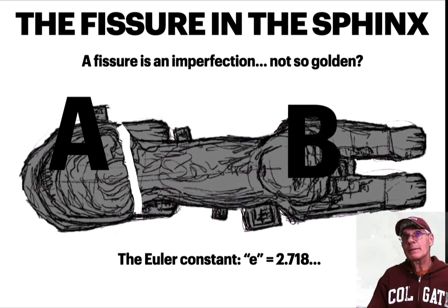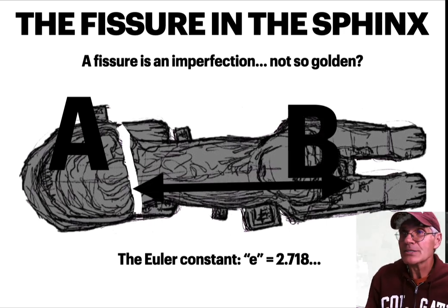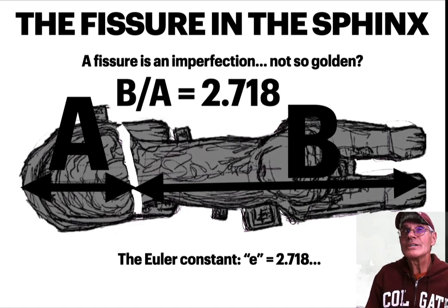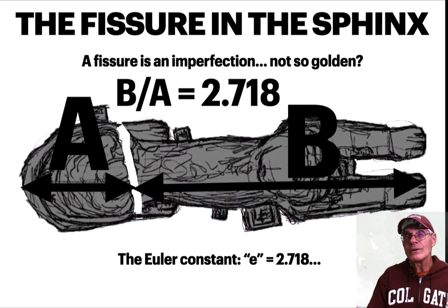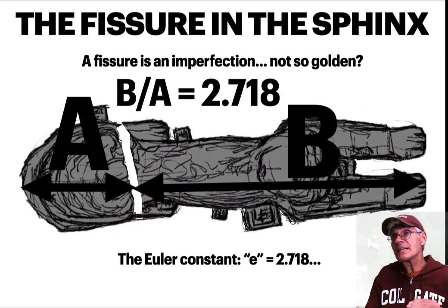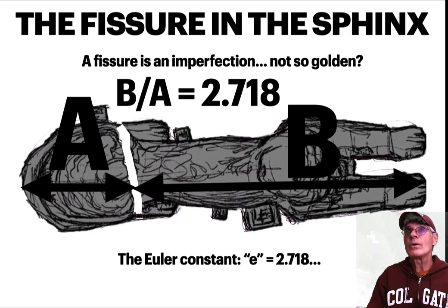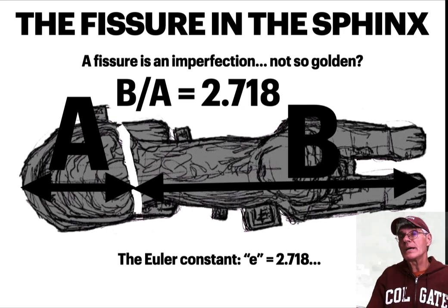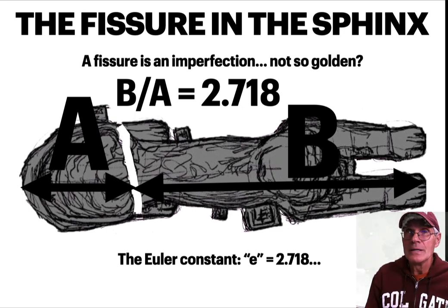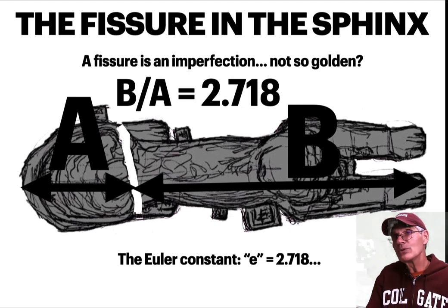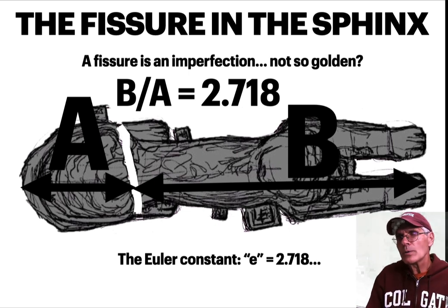The Euler constant is e = 2.718. If you take A as the back part of the fissure and B as the front part of the fissure, and you do the division of B over A, you get Euler. There are various ratios depending on where you draw those horizontal lines, and I drew them at the point where the ratio is exactly 2.718, over the right paw as you can see. So somehow the Euler measure is associated with this imperfection — this wound to the Sphinx.